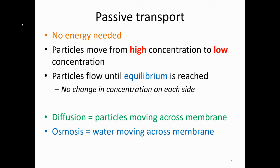Equilibrium is where you have the same concentration on one side as on the other side. Particles are in constant motion, so some from each side are switching sides across the cell membrane. It's just that more cross over from the high concentration side to the low concentration side. We're talking about concentration, not the number of particles moving — from high to low.